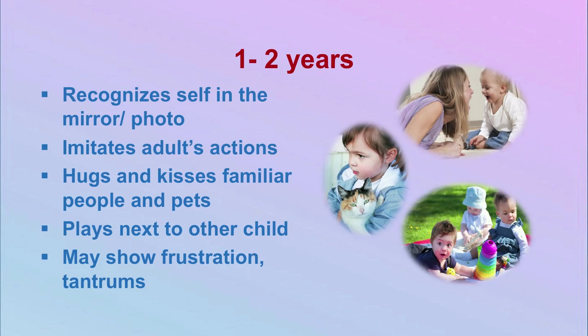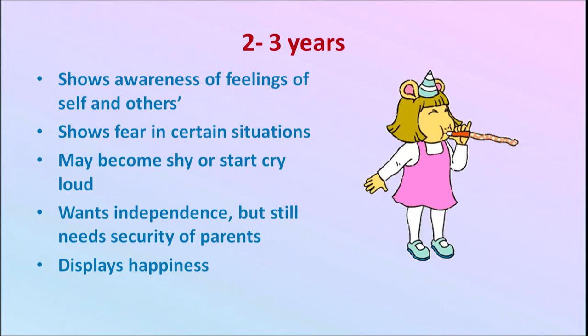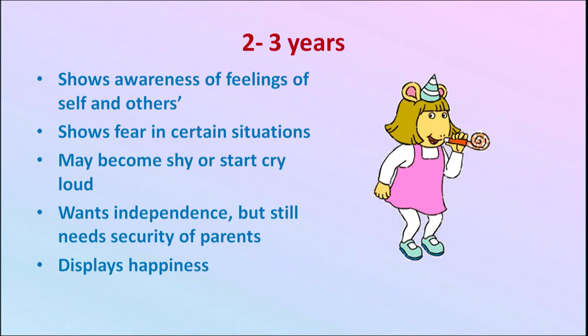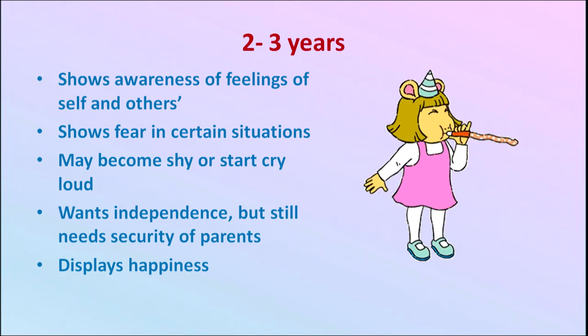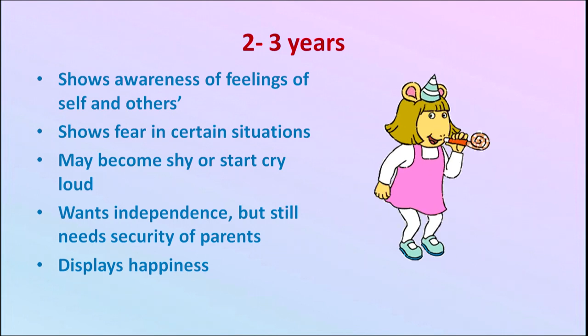From 1 to 2 years, the child recognizes self in a mirror or photo, imitates adults' actions, hugs and kisses familiar people and pets, plays next to other children, and may show frustration and tantrums. From 2 to 3 years, the child shows awareness of feelings of self and others — recognizing whether a parent is happy or upset — shows fears in certain situations, may become shy or cry, and wants independence but still needs the security of parents.